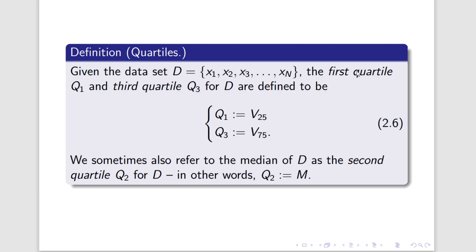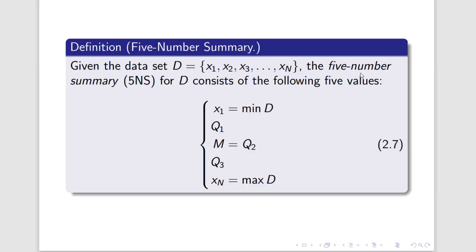What we're going to do with these quartiles and the median is the following: we're going to give the five-number summary for D. The five-number summary consists of, first of all, the smallest number — the smallest data point of D, which if we've ordered from least to greatest is X1 — the first quartile, the median or second quartile, the third quartile, and then the maximum data point of D, which should be XN. If we put these five numbers together, then we have a slightly better idea of the behavior of D, and that allows us to overcome problems like the median not changing between two data sets which just happen to have different extremes.